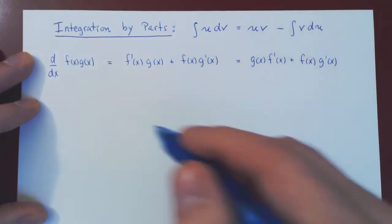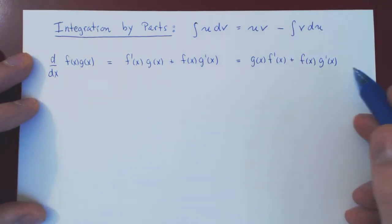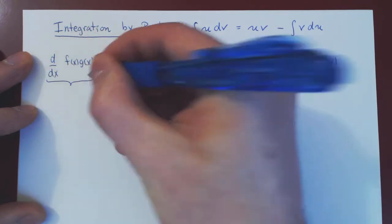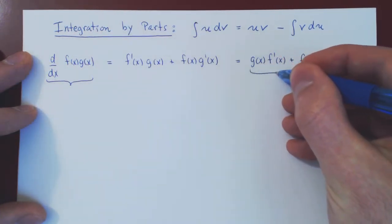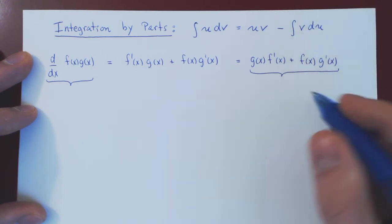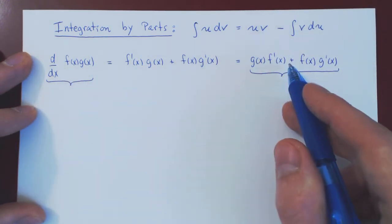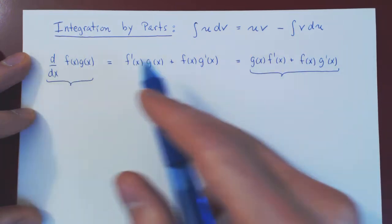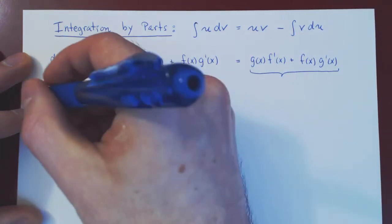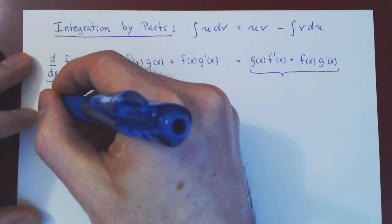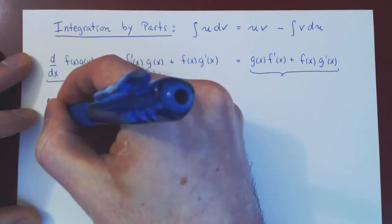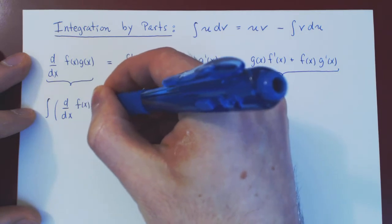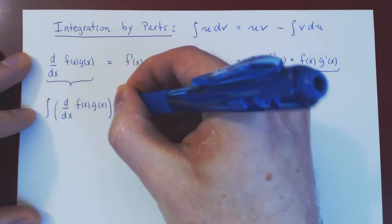This function of x and this function of x are both equal — the derivative of fg equals this. So if they're equal as functions of x, they must have the same integral with respect to x. So we'll integrate both sides with respect to x: we'll integrate the left-hand side, the derivative of f(x)g(x), with respect to x.